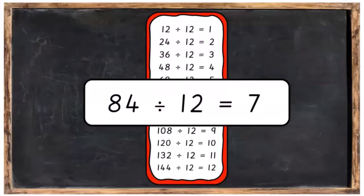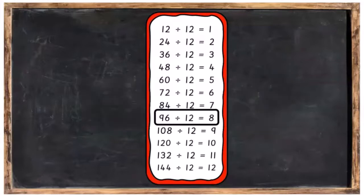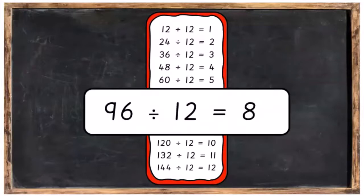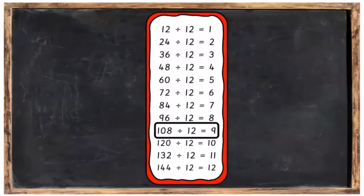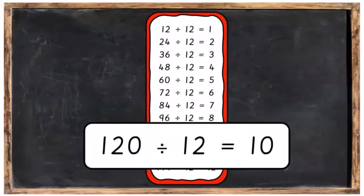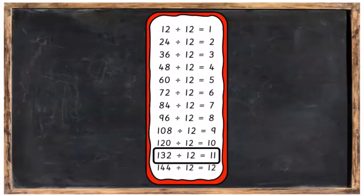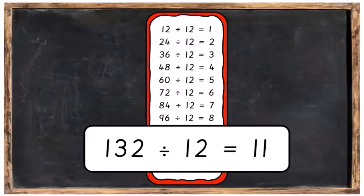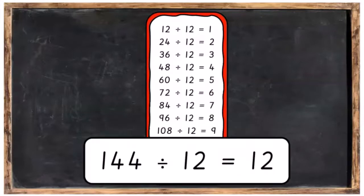12 into 72 goes 6 times. 12 into 84 goes 7 times. 12 into 96 goes 8 times. 12 into 108 goes 9 times. 12 into 120 goes 10 times. 12 into 132 goes 11 times. And 12 into 144 goes 12 times.